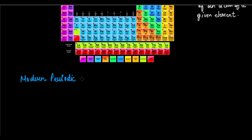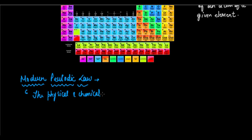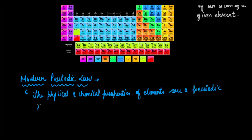Just like Mendeleev formulated his own periodic law based on atomic mass, Moseley formulated the modern periodic law in terms of atomic number. He said that the physical and chemical properties of elements are a periodic function of their atomic number. This was the modern periodic law. Moseley formulated this law and classified elements based on atomic number, coming up with the modern periodic table — also called the long form of the periodic table, and also called Moseley's periodic table.